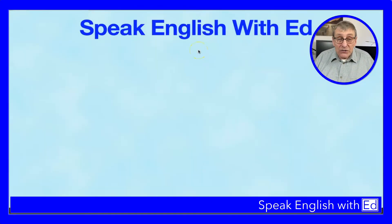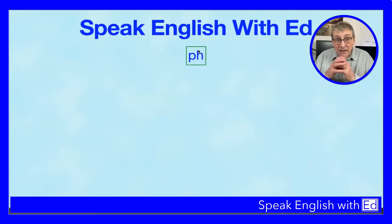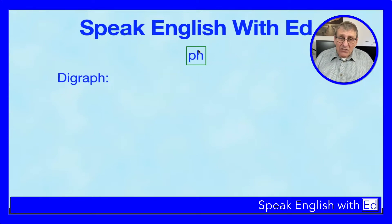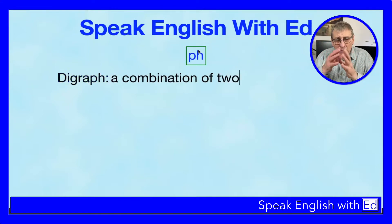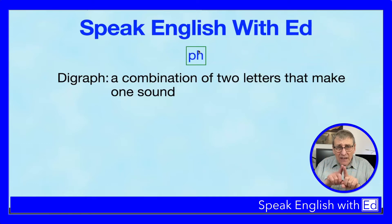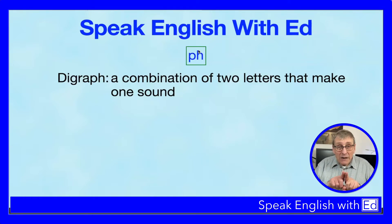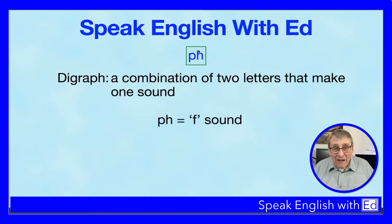So what's special about English words that contain PH? Well, PH when it's joined together side by side like this is called a digraph. A digraph is a sound made when two letters are joined together and you don't pronounce the letters separately — you pronounce them differently. The digraph we're looking at today is PH, and you don't pronounce it as separate letters. You pronounce it with an F sound.